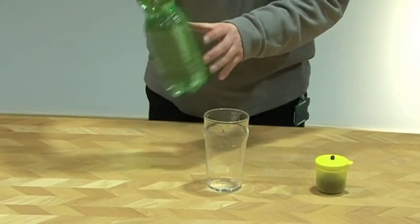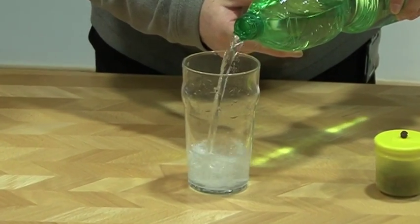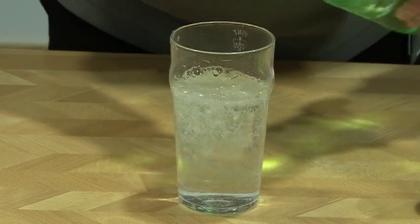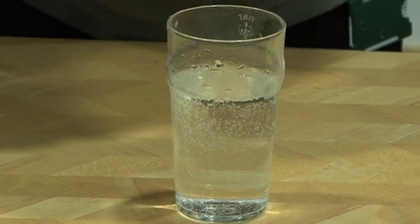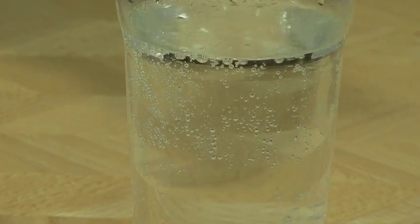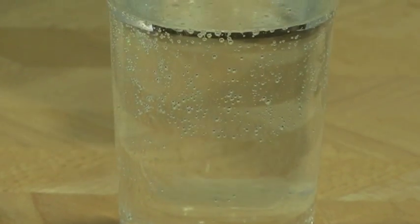So let's pour some of this sparkling water into the glass, you'll see it's quite fizzy. You'll see that the bubbles are forming on the side of the glass where there's imperfections or little bits of dirt and that's required to allow those bubbles to form.